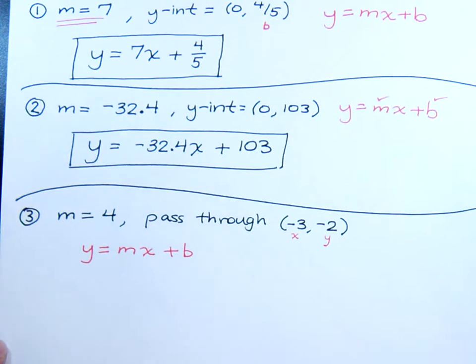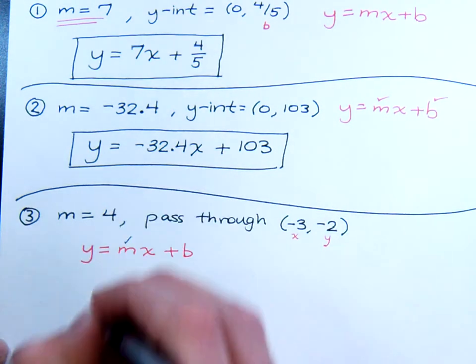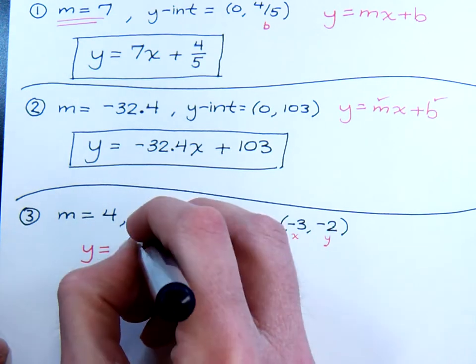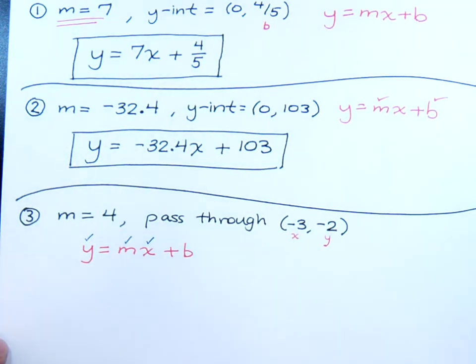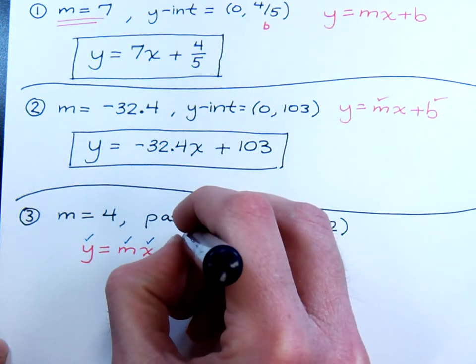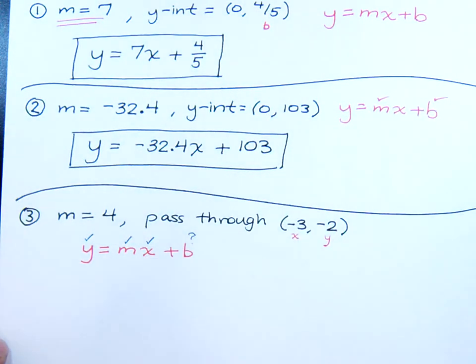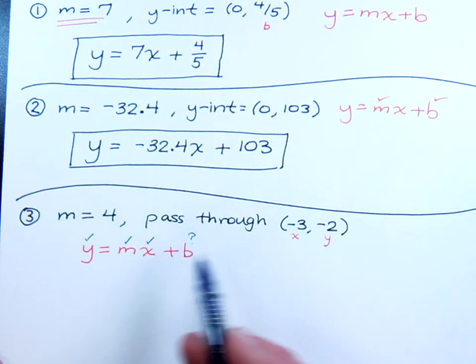Well, if that's the case, in this formula, you have your slope, which is 4, you have an x coordinate, you have a known y coordinate. That just means that you don't know the b. And so really, it's just a matter of plugging in these three numbers and solving for b.